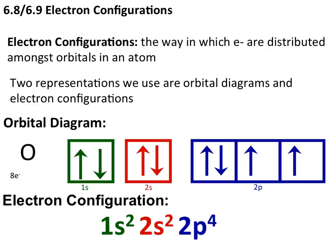Same thing for the 2s orbital — we have a superscript of 2 — and for our 2p orbitals we have four total electrons there. Both of these could be ways in which you're asked to diagram the distribution of electrons in an atom, so we want to make sure that we're familiar with both.